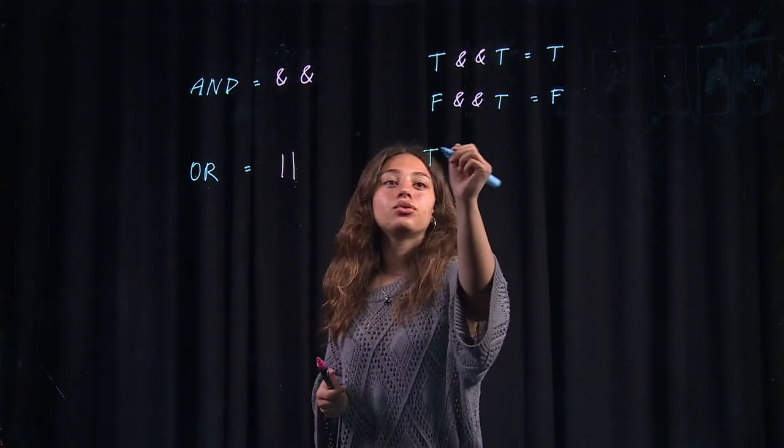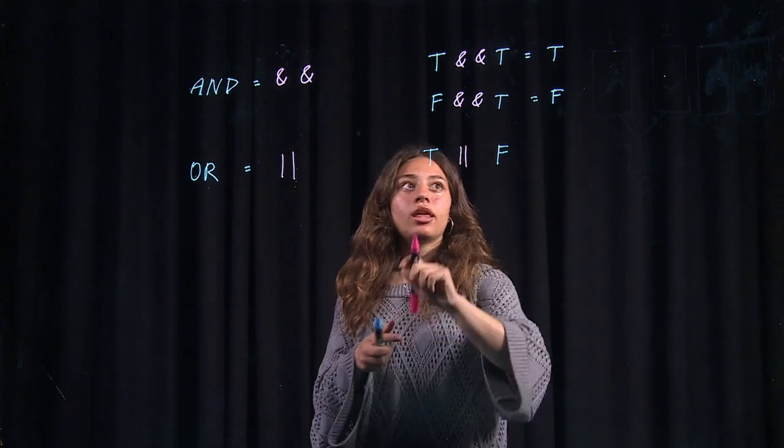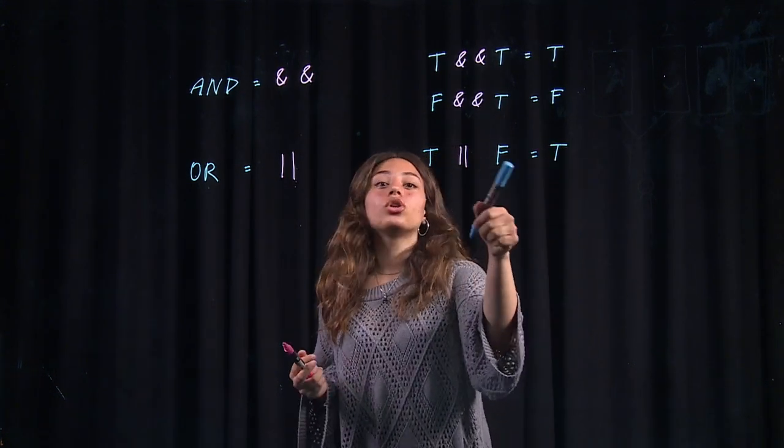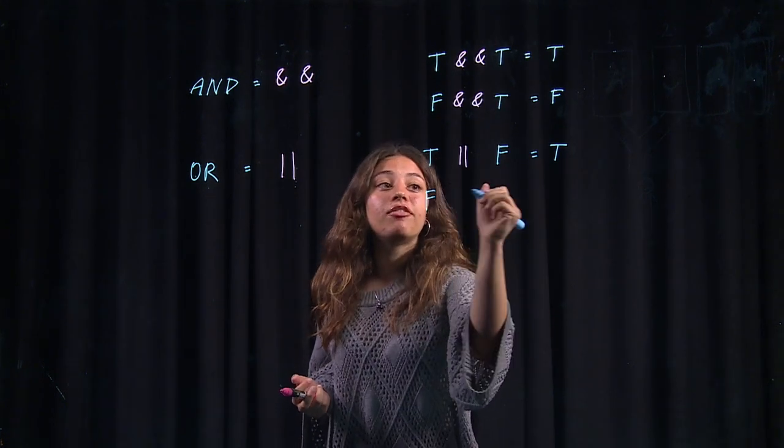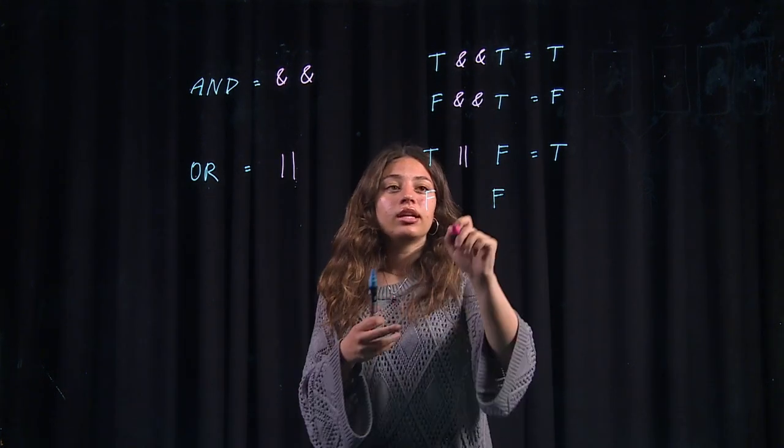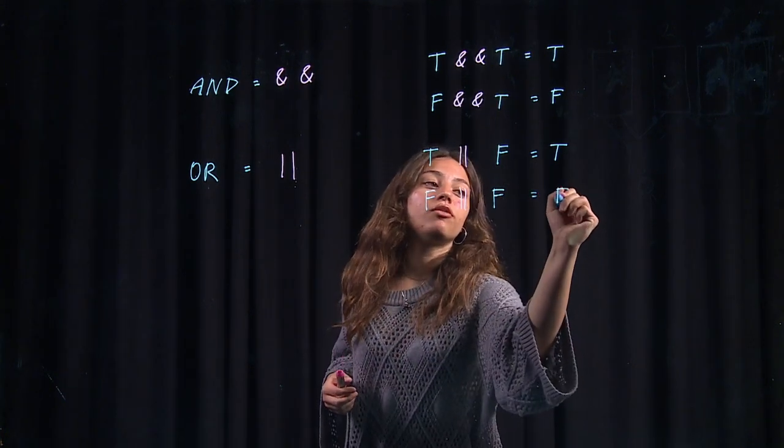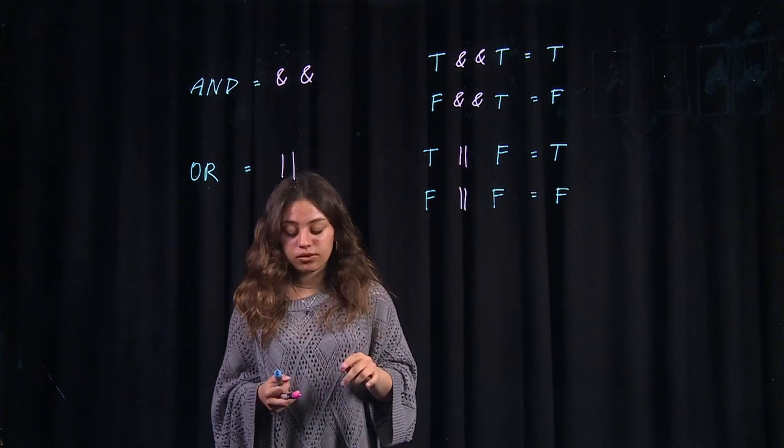So basically, in English, if I have true or false, that is going to equal true. If I have true or true, it's also going to be true. But if I have false or false, neither of them are true. So it's going to equal false.